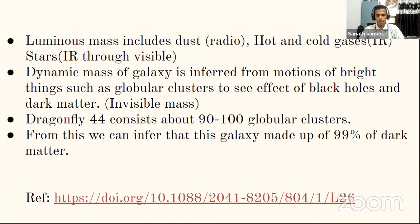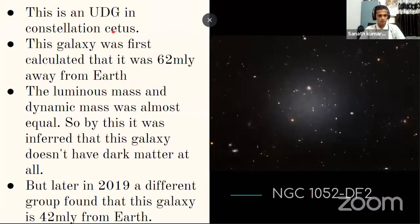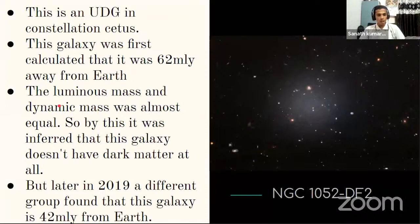Another ultra-diffuse galaxy is NGC 1052-DF2 in the constellation Cetus, initially calculated to be 62 million light-years away. For this galaxy, the luminous mass and dynamical mass were found to be almost equal — meaning visible and invisible mass are equal — predicting the galaxy contains essentially no dark matter. However, a second team later conducted another study on this galaxy.